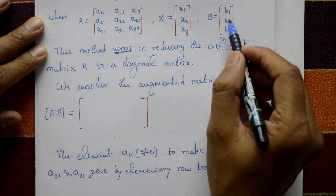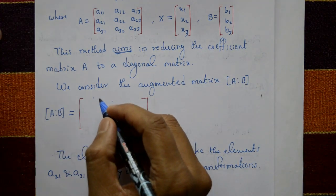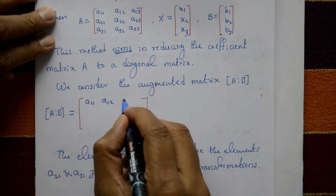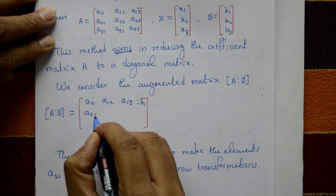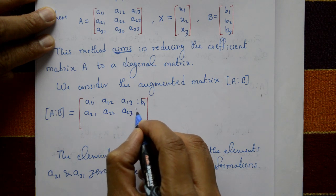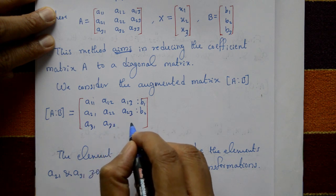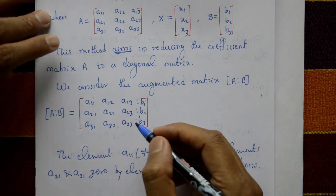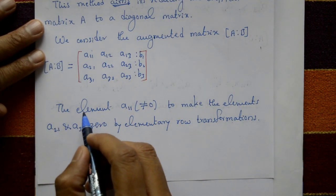We consider the augmented matrix — matrix A with the column matrix b appended. The augmented matrix is: [a11, a12, a13 | b1], [a21, a22, a23 | b2], [a31, a32, a33 | b3].